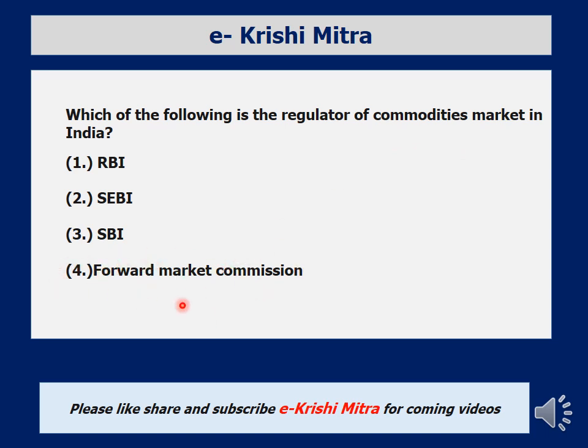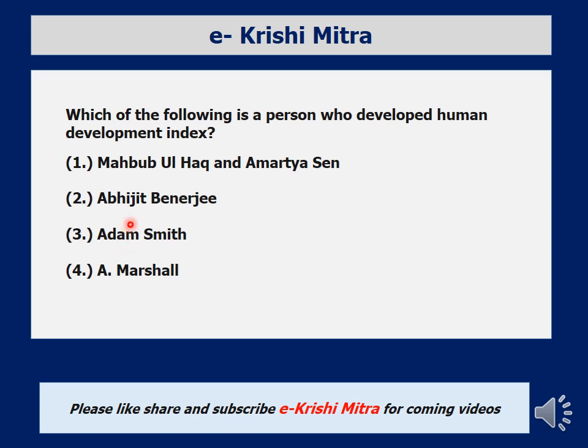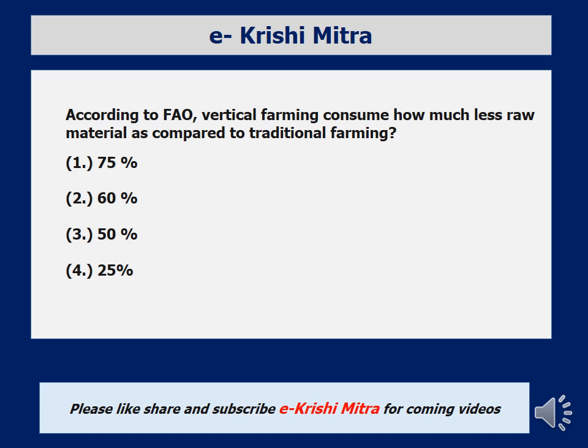Second question: which of the following persons developed the Human Development Index? The HDI was basically developed to know life expectancy, living standards, education, and per capita income. Options include Mahbub ul Haq and Amartya Sen, Avid Banarji, Adam Smith, and Alfred Marshall. Mahbub ul Haq is the right answer. Amartya Sen is also associated with HDI and is of Indian origin.